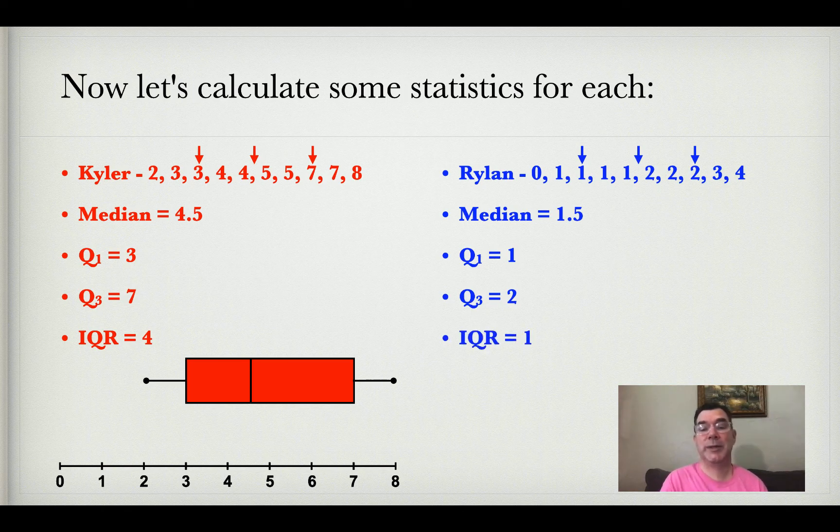The interquartile range is the difference between 1 and 2, so 2 minus 1 equals 1. That's the IQR.